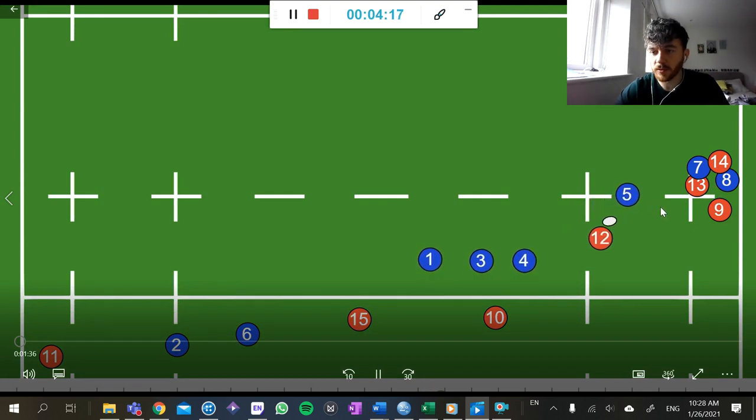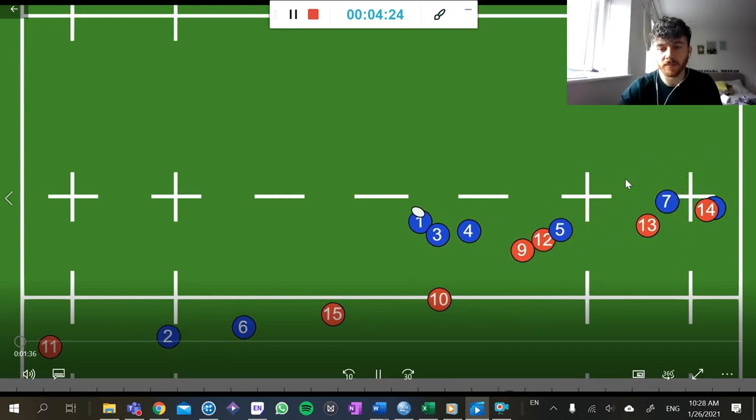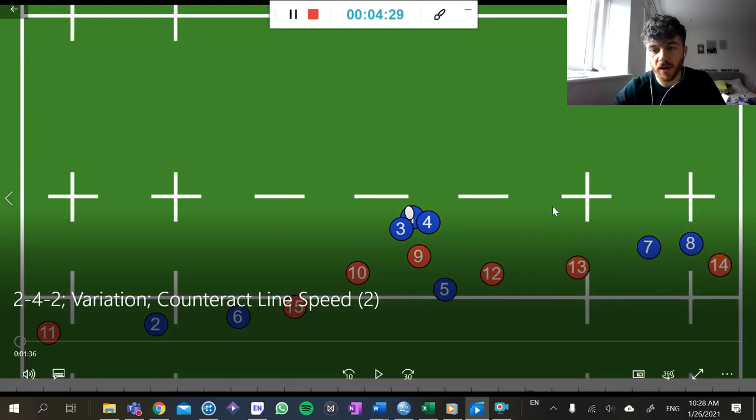So an option here as well is for that 9 to scoot or to taxi and that will draw in defenders there. And then he might be able to hit that 5 on a short pass. So we've hit our pod and this is another option then for our 5.